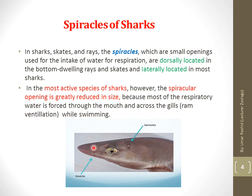Normally, most sharks open their mouth during swimming and water passes through and exits via the spiracles. This process is known as ram ventilation, which is found in elasmobranchs — including sharks, skates, rays, and sea sharks. In more active shark species, the spiracular opening is greatly reduced because they respire through their mouth via ram ventilation, continuously keeping their mouth open to intake water and pass it across their gills.